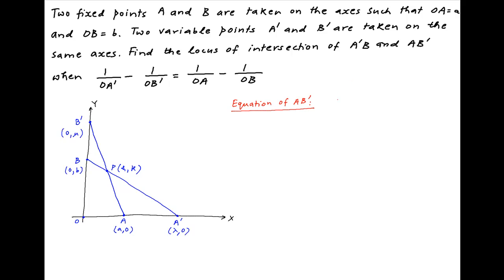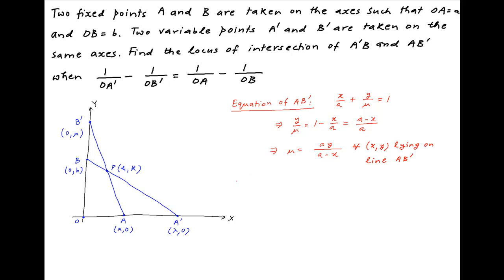Now the equation of the line AB' is x/A plus y/μ is equal to 1, which implies that y/μ is equal to 1 minus x/A, which is equal to (A minus x)/A. And therefore μ is equal to Ay/(A minus x) for all values of x and y lying on the line AB'. Since the point P with coordinates H,K lies on the line AB', it will satisfy the above equation. And therefore μ is equal to AK/(A minus H). Let's call this Result 1.